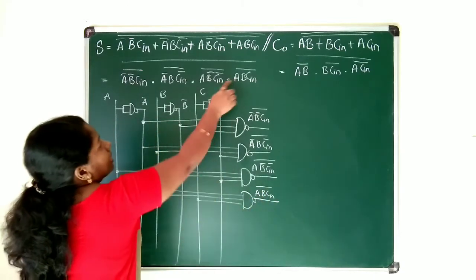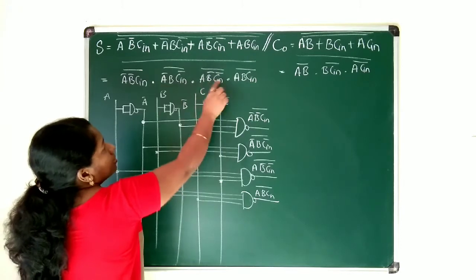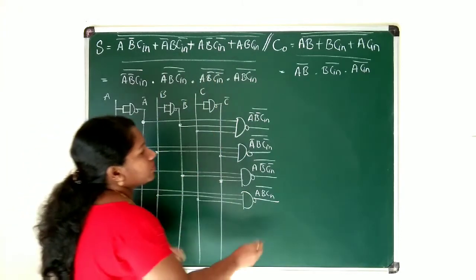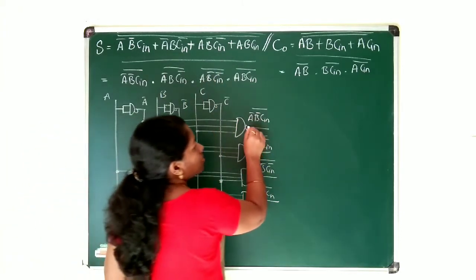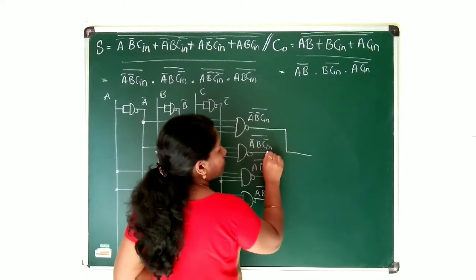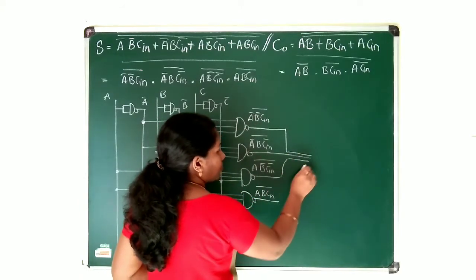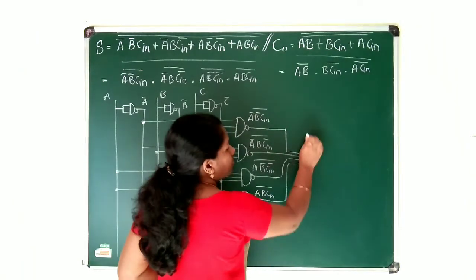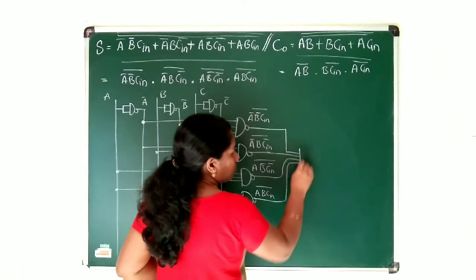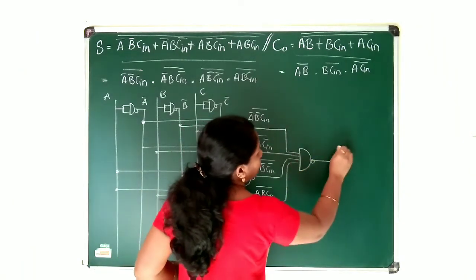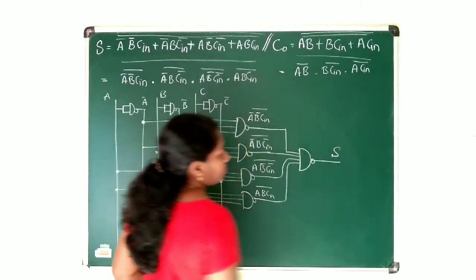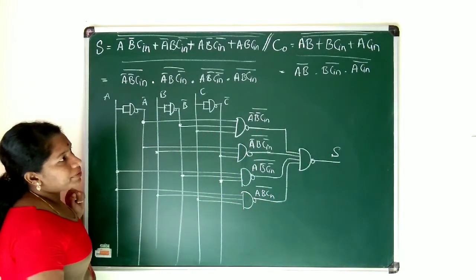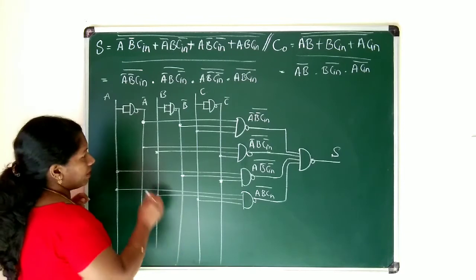All four terms are related with dot and whole complement, so connect one more NAND gate combining all of them. This gives the output Sum.